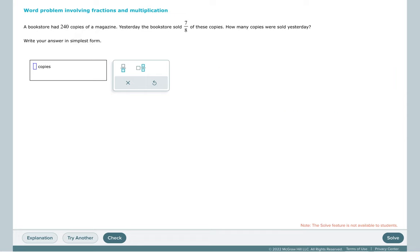This problem says a bookstore had 240 copies of a magazine. Yesterday, the bookstore sold seven-eighths of these copies. How many copies were sold yesterday? So we're trying to find seven-eighths of 240.